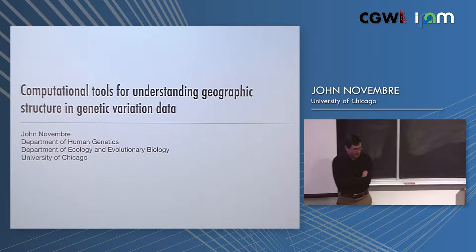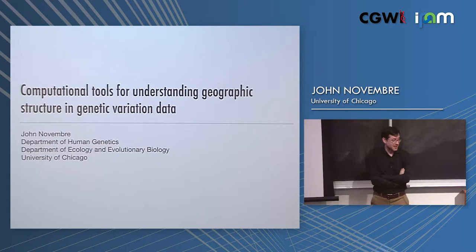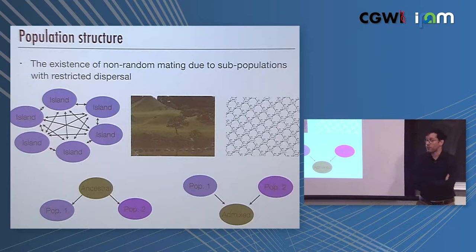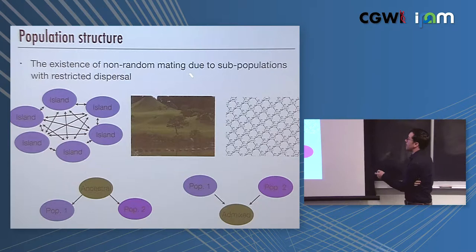Hi, I'm John Novembre. I'm at the University of Chicago, and I've been talking about understanding geographic structure and genetic variation data today. So, population structure is a fundamental feature of biological species, and it can be conceptualized in several different ways.